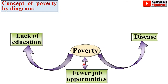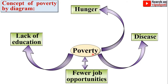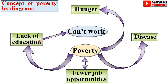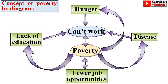This is a vice versa, meaning two-way relationship. Due to poverty, hunger will be there. Due to lack of education, people can't work in industry or in society. Due to the number of diseases, people also can't work. Due to hunger, people can't work. And at last, due to all this, there will be more poverty. So the concept of poverty and its effects can be understood through this diagram.